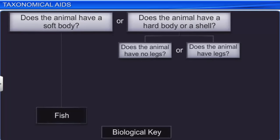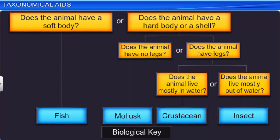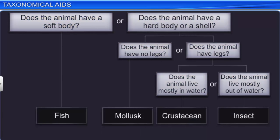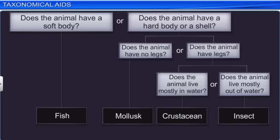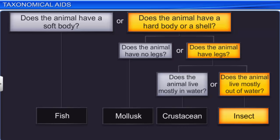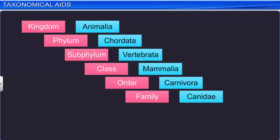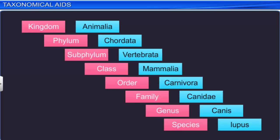A biological key is another taxonomical aid used for the identification of plants and animals. It is a list of questions that help identify and classify a living organism. Each question presents contrasting characters of an organism in a pair called a couplet. To classify the organism, the character similar to the organism has to be chosen. So in a couplet, one character is accepted and the other is rejected. Answering the questions in this analytical manner helps in identifying the organism. Separate taxonomic keys are required for each taxonomic category, such as family, genus, and species, for the purposes of identification.